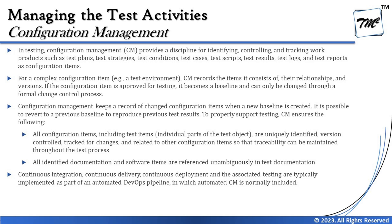To properly support testing, configuration management ensures the following: all configuration items — including test items and parts of the test objects — are uniquely identified, version controlled, tracked for changes, and related to other configuration items so that traceability can be maintained throughout the test process. Additionally, all identified documentation and software items are referred to unambiguously in the test documentation. When it comes to CI/CD or continuous deployment, the associated testing is typically implemented as part of an automated DevOps pipeline, in which automated configuration management is normally included.